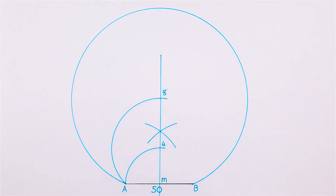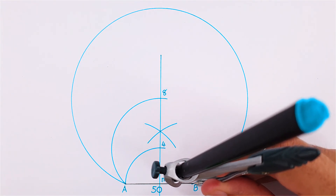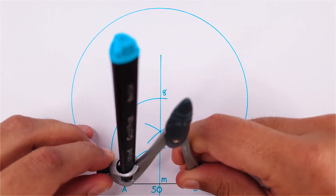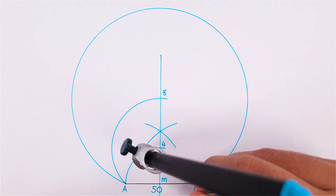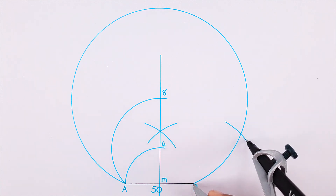You can now use your compass to mark out your octagon by using the full side length. When you're done, label the intersections accordingly.